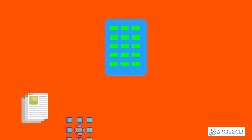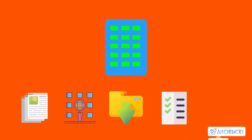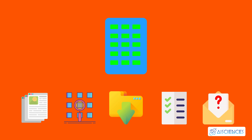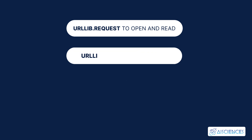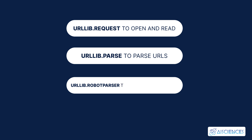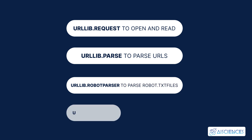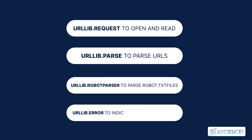Number 5: urllib. urllib, a Python package, enables you to access websites, parse data, download data, and perform any POST and GET requests. This URL handling module fetches URLs, or uniform resource locators, using an assortment of protocols. It collects the following modules for working with URLs: urllib.request to open and read, urllib.parse to parse URLs, urllib.robotparser to parse robot.txt files, and urllib.error to indicate exceptions raised.